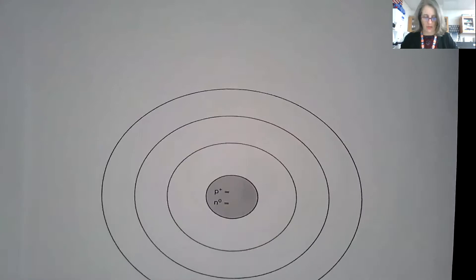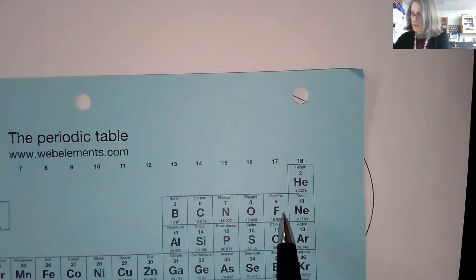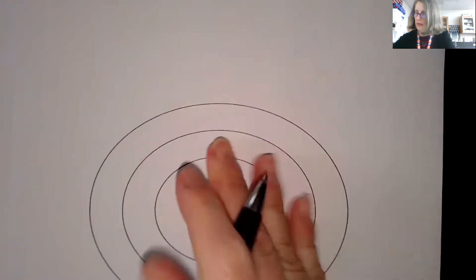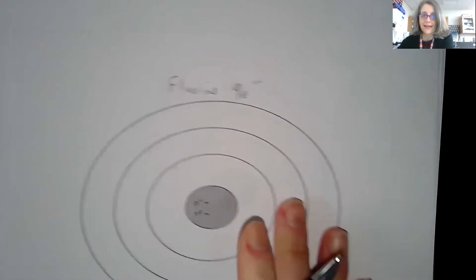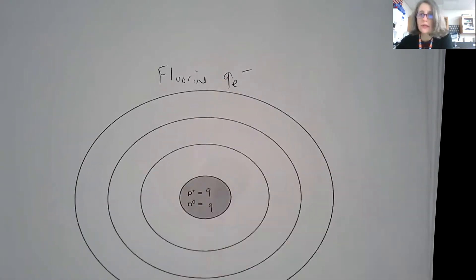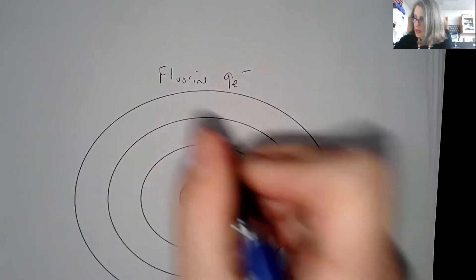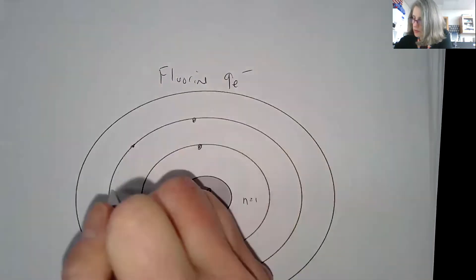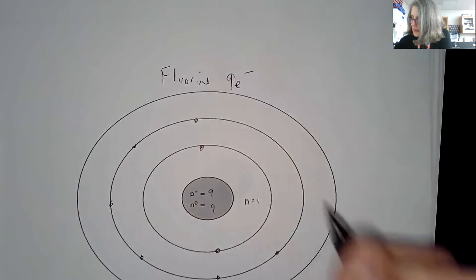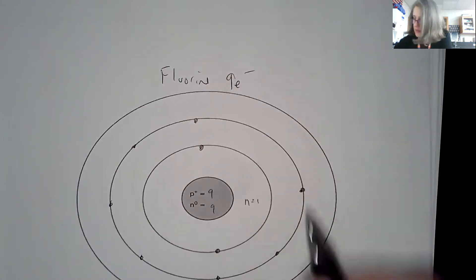Let's look at fluorine. Fluorine is number nine on the periodic table, so it has nine protons and nine electrons. We put two electrons in the first energy level, and then one, two, three, four, five, six, seven electrons in the second energy level.